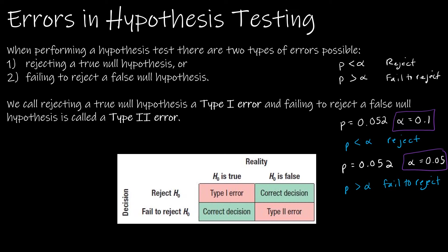So now let's talk about errors. There are certain kinds of errors that can occur when we are performing a hypothesis test. One is rejecting a true null hypothesis. If you take a look at the table here, if I reject the null — the correct decision is when the null is false — a type one error is when I reject it when it is true. And that is a type one error, and that has everything to do with alpha.